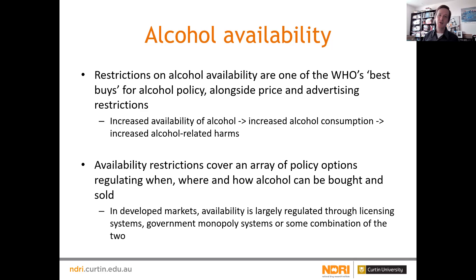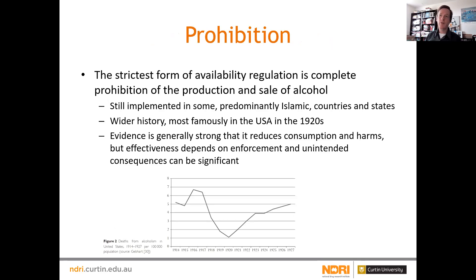When we're talking about availability restrictions, we're talking about a whole range of policy options that try and regulate when, where and how alcohol can be bought and sold. These are usually regulated through liquor licensing systems, government monopolies, or some sort of arrangement that manages the way that alcohol is sold in a society. The most strict form of availability intervention is complete prohibition.